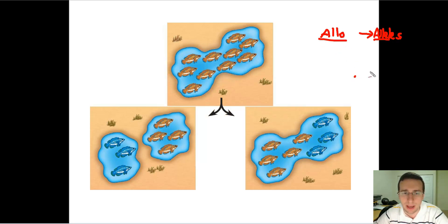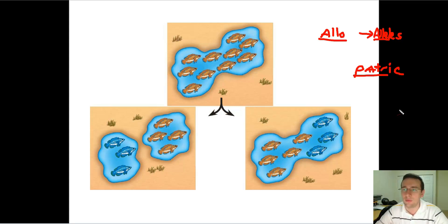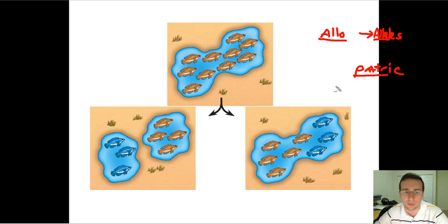What about 'patric'? Have you heard this root somewhere? Have you heard the word patriotic? Patriotic means to have love for your country — patria. So what do you think 'patric' means? It actually means country. So allopatric — what does that mean? Different country. So allopatric speciation has to do with being in different locations, being physically separated from each other.